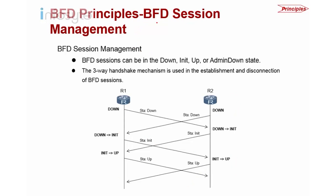Now let's look into BFD session management and the establishment of the BFD session. The states of BFD include: Down state, Init state, and Up state — or you can administratively shut it down. The diagram shows the three-way handshake mechanism for establishing and disconnecting BFD. At first, R1 and R2 are in Down state because BFD has not been configured. Once BFD is enabled, both R1 and R2 go into Init state, then transition to Up state.